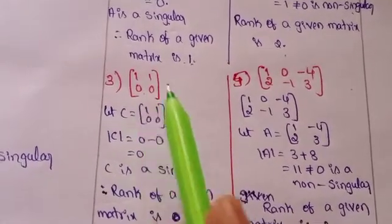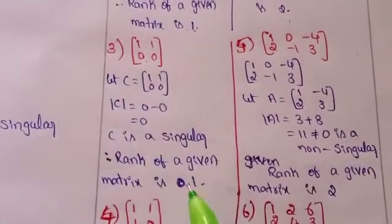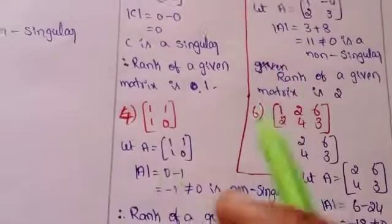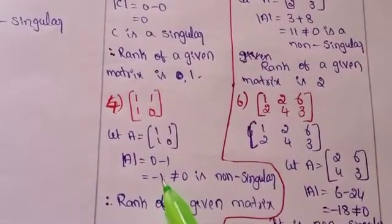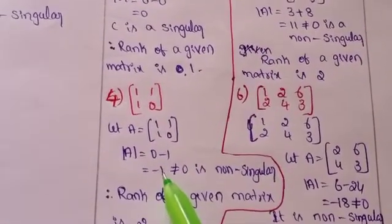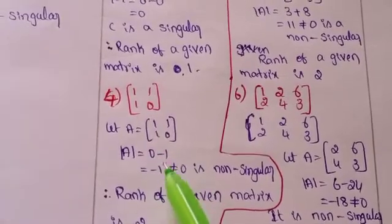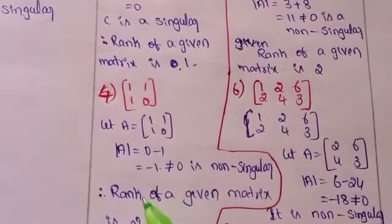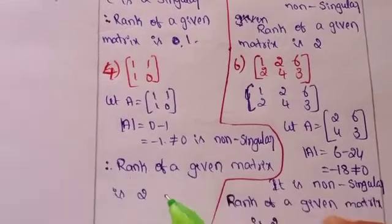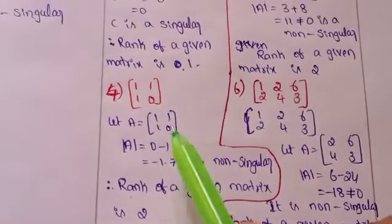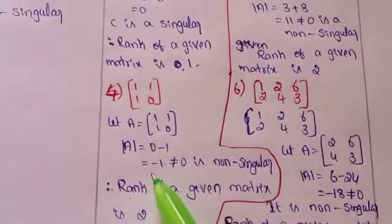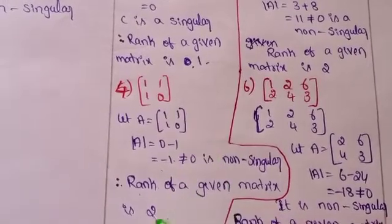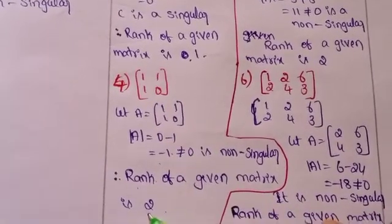Here also the determinant is minus 1, so it is a non-singular matrix and the rank of the given matrix is 2. Because the determinant is minus 1 and this is a 2x2 matrix, the rank is 2.